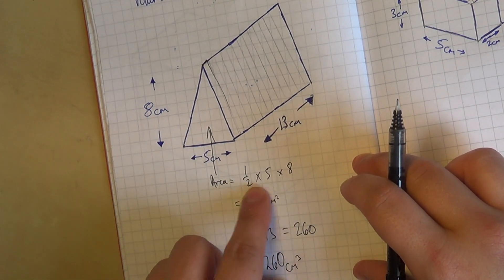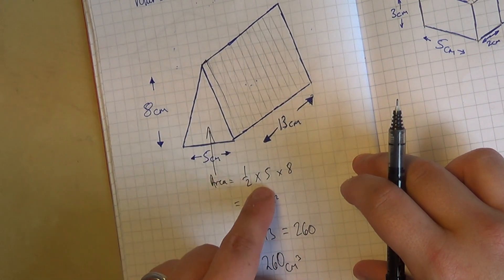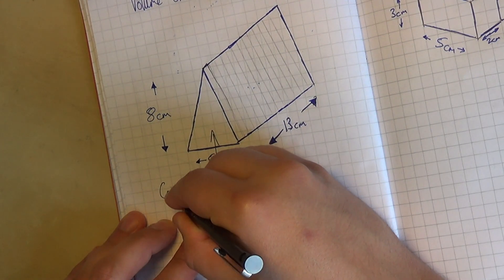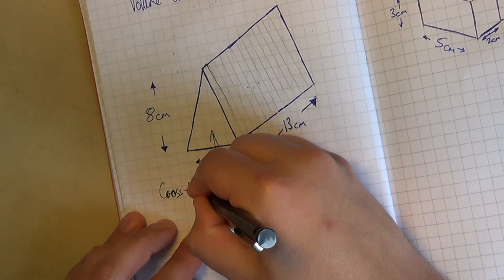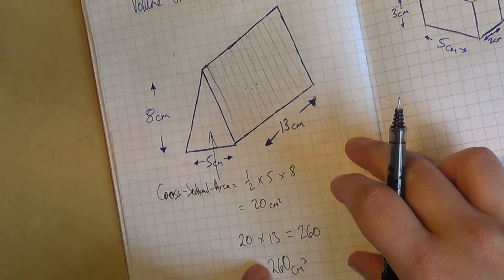Here it was a triangle, so we needed the triangle formula, but this bit will change depending on what's on the end. So we'll start with this bit first. So this is the cross section, the cross sectional area that we are multiplying by the length.